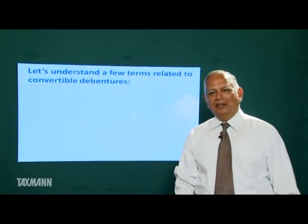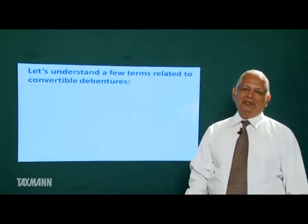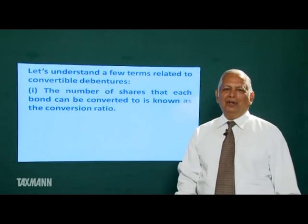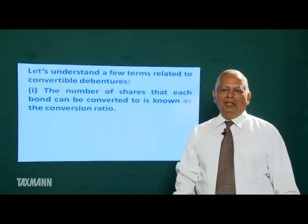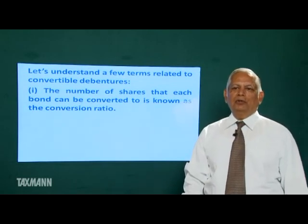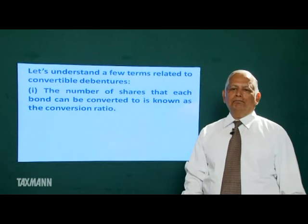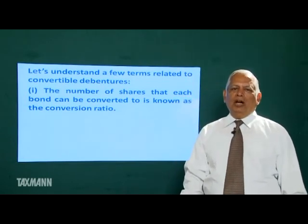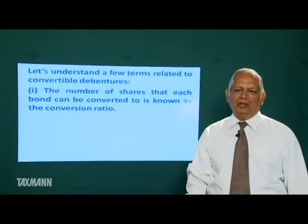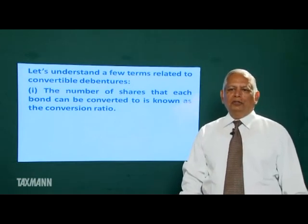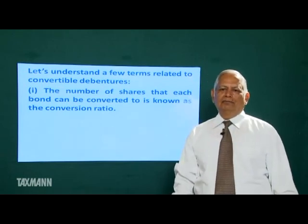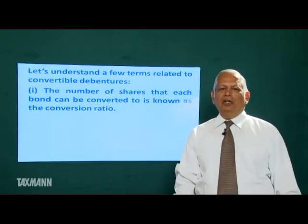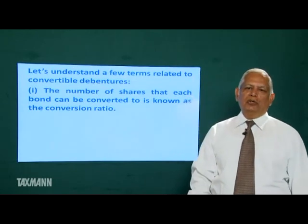Let's understand a few terms related to convertible debentures. The first term is conversion ratio — the number of shares that each bond can be converted into. For example, a company issues a bond that can be converted into 5 equity shares, so the conversion ratio is 5. If a bond can be converted into 20 equity shares, the conversion ratio is 20.